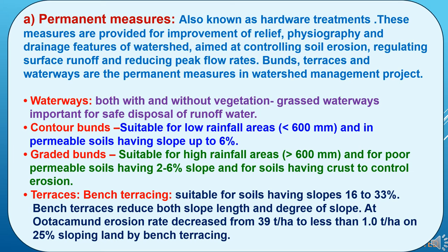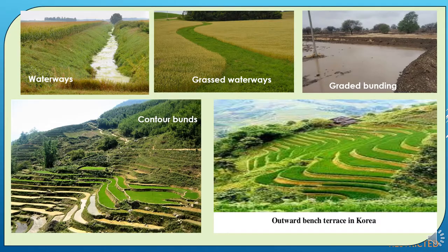So we can say these measures are very effective for controlling soil and water erosion. There are pictures of permanent treatment measures like water wedge, grassed waterway, graded bunding, contour bunds and bench terraces.